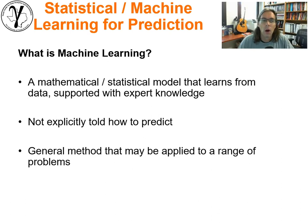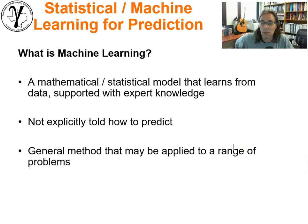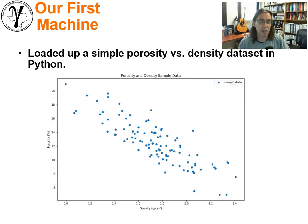Let's ask a question. What is a machine in machine learning? Really, it's a mathematical, statistical, data-driven model that learns from data, supported with expert knowledge. Not explicitly told how to predict. It's a general method that may be applied to a range of problems. A model that can be used for many different problems.